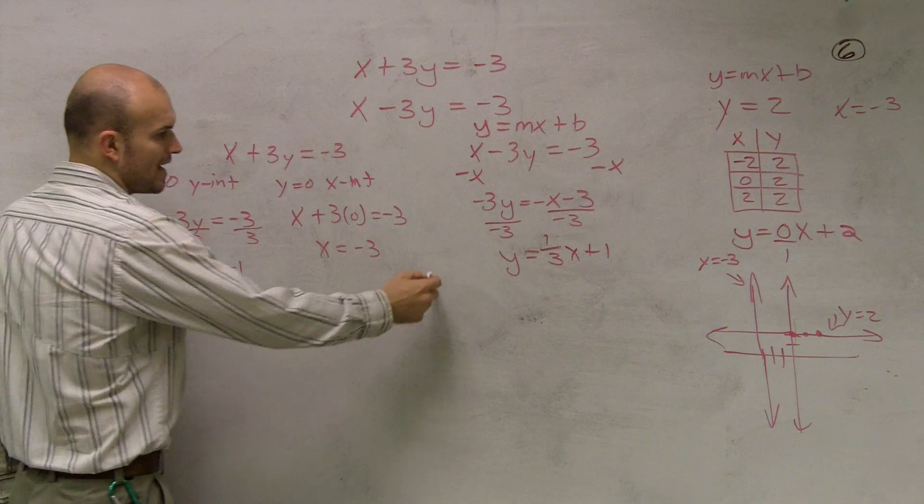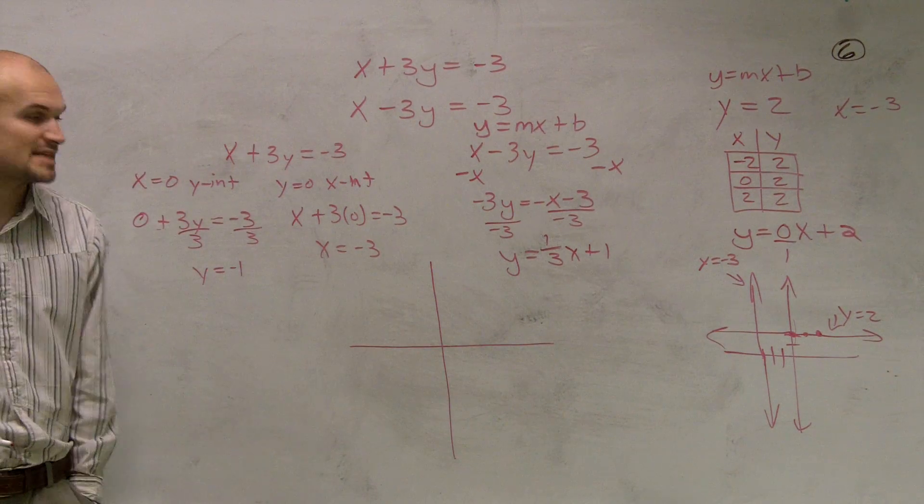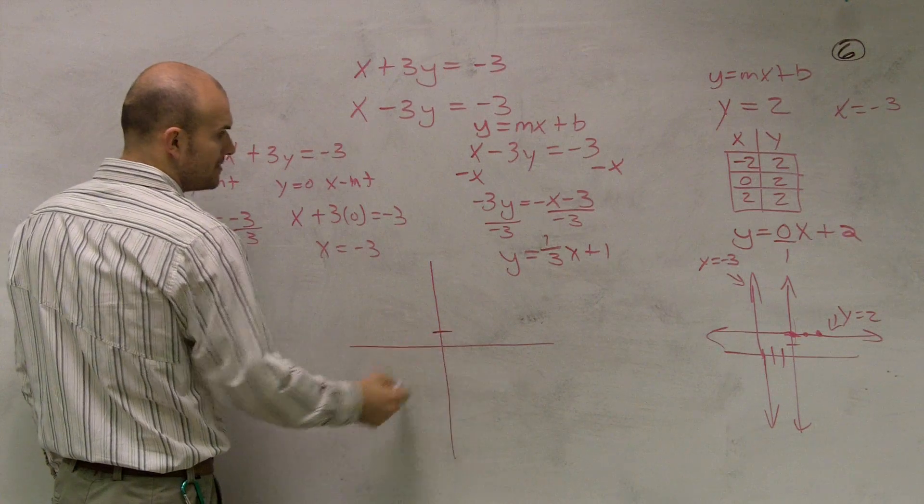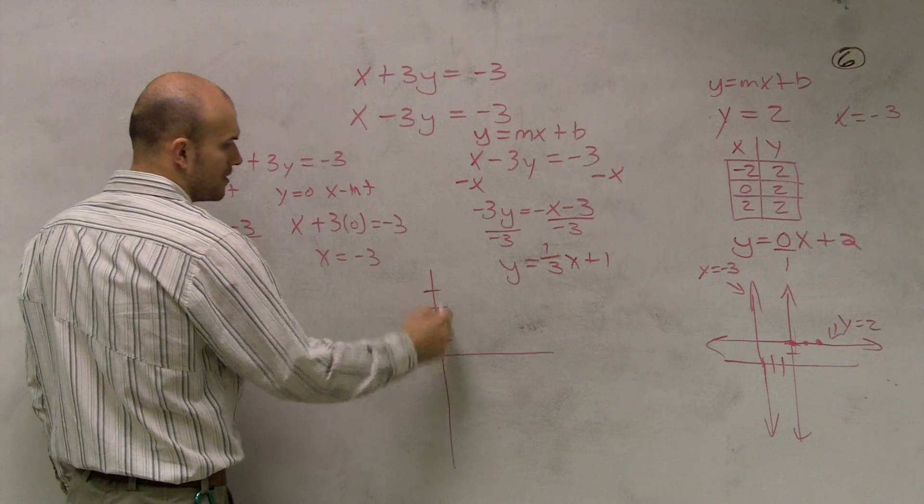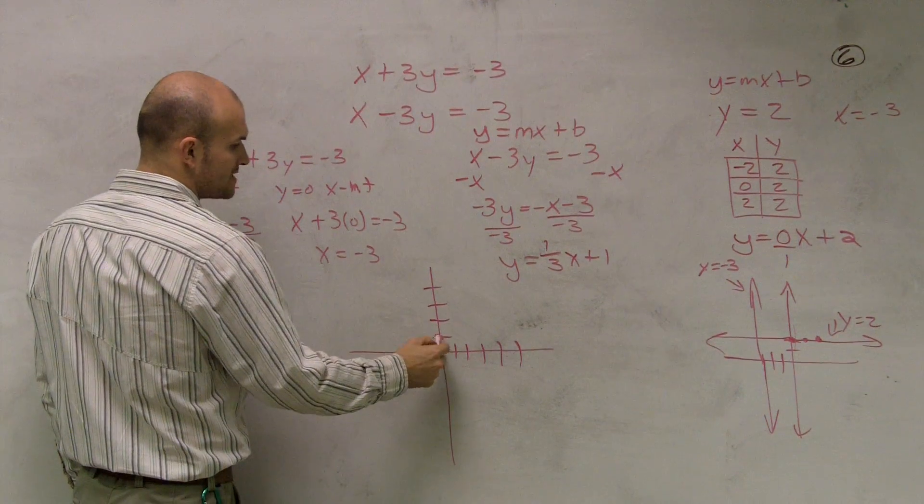All right? So now, ladies and gentlemen, to graph these two lines, since I'm solving the system, I'm going to put them on the same axis. So I'm going to go up one, and this one tells me to go up one over three. So I go up one is my Y intercept.